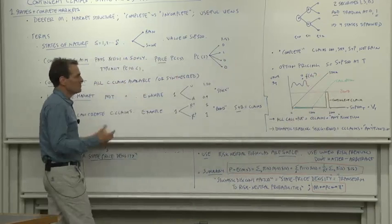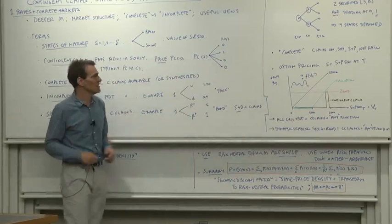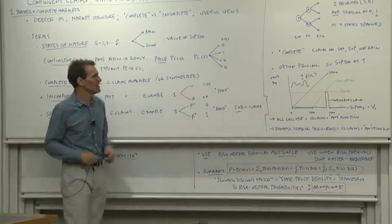So when we say complete markets, markets can be complete because contingent claims are traded. They're not in reality. Markets can be complete, at least complete on some security, if there's a sufficiently rich set of securities or a sufficiently rich set of trading opportunities.